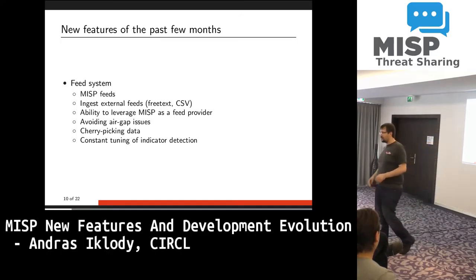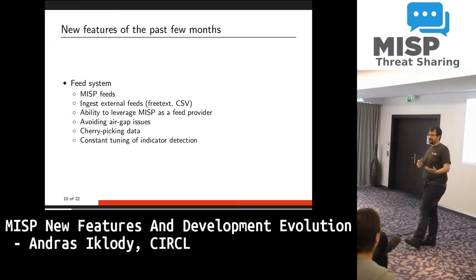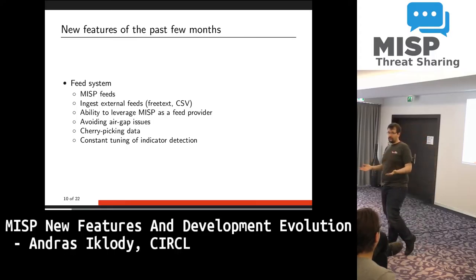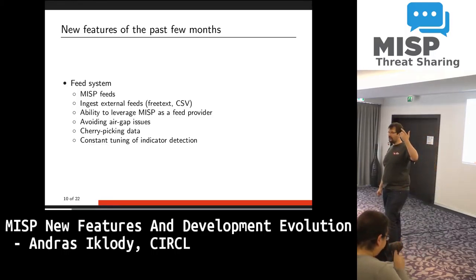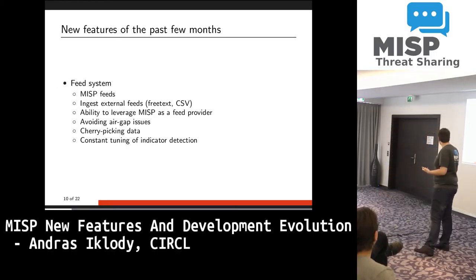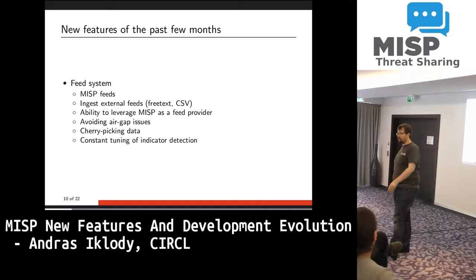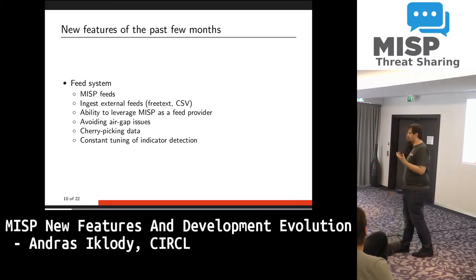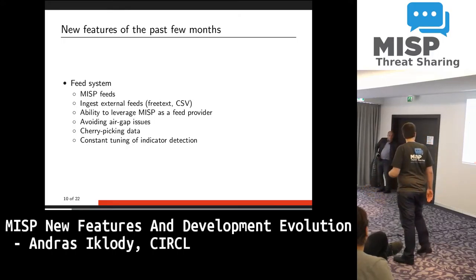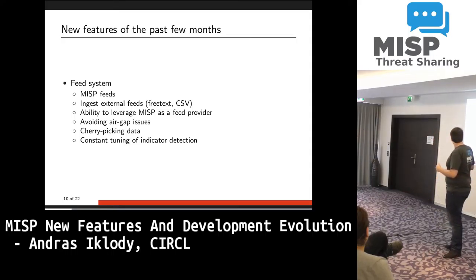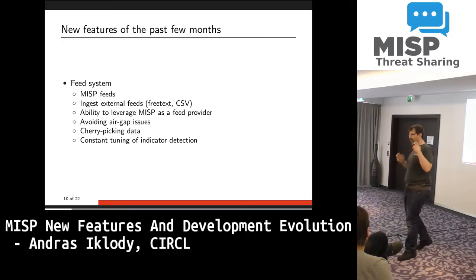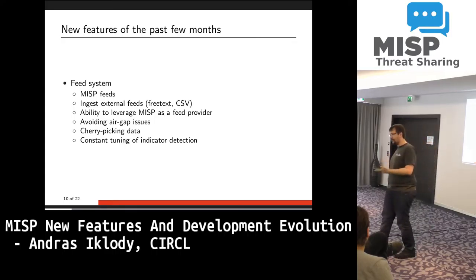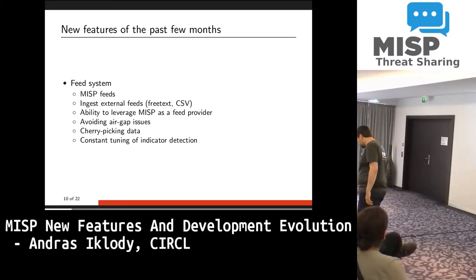We've also added the possibility to use other types of feeds beyond the MISP format. If you know a feed in CSV format, for example, you can tell MISP to fetch and parse the data based on some rules — at minimum, specifying which column to look at, and letting MISP auto-parse IP addresses, domain names, and so on. You can also define rules for what to do with the data: should it create a new event each pull, concentrate into the same place, or be published automatically?